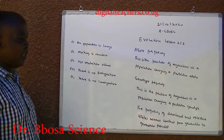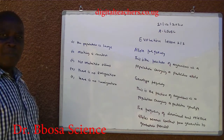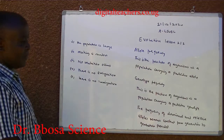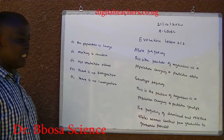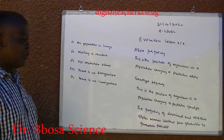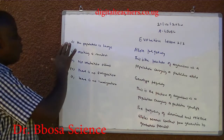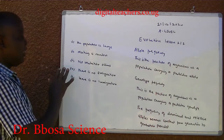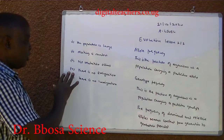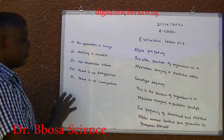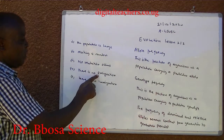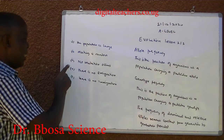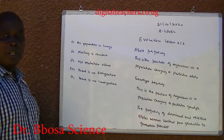Genotype. A genotype is made up of two alleles. The frequency of dominant and recessive alleles remains constant from generation to generation, provided: one, the population is large; two, mating is random; three, no mutation occurs; four, there is no emigration; five, there is no immigration. Immigration and emigration is sometimes referred to as gene flow. So provided there is no gene flow between populations.